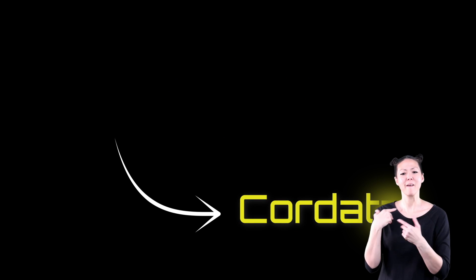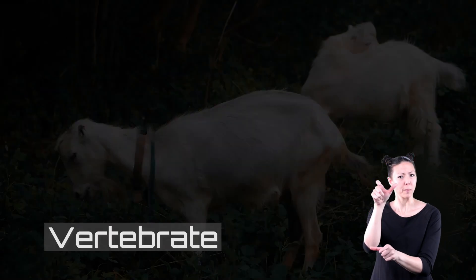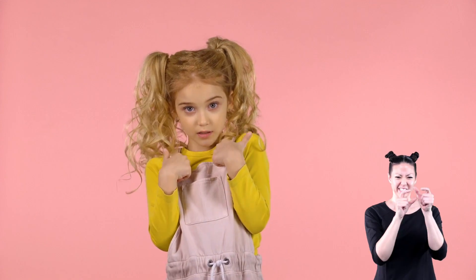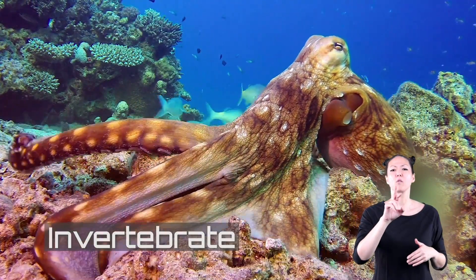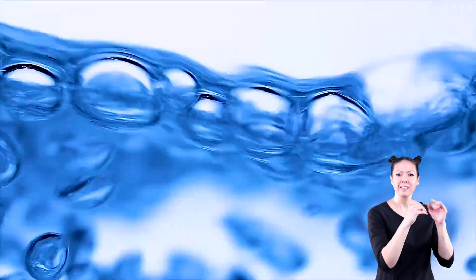Within that group are animals with vertebrae and animals without vertebrae. A vertebrate is an animal with a spine. You are a vertebrate. An animal without a spine is called an invertebrate. Let's take a closer look at both vertebrates and invertebrates.